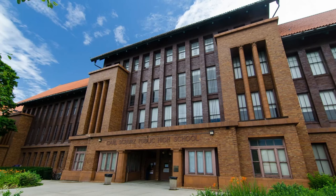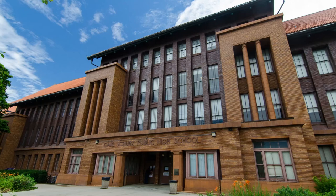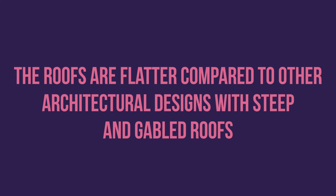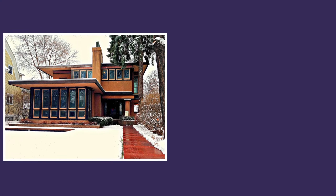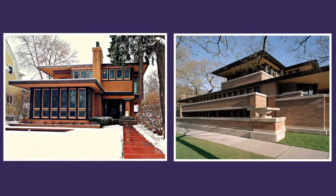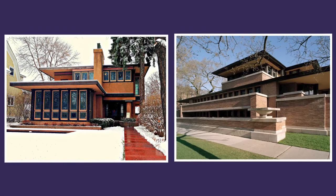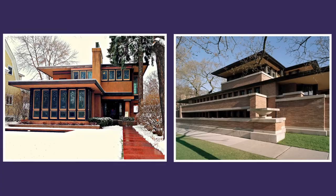Horizontal Lines. Many surfaces were positioned in horizontal ways to match the flat Midwest, which is in contrast to the art deco movement that had surfaces pointed upwards. The roofs are flatter compared to other architectural designs with steep and gabled roofs. Gabled rooftops are necessary for areas that receive a lot of snow; however, they are not entirely necessary in the Midwest. The low roof design helped the homes flow seamlessly with the prairie landscape, from which this style gets its name. You can see the flat surfaces here in these two prairie houses.